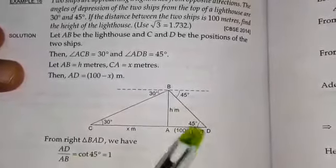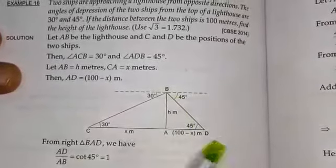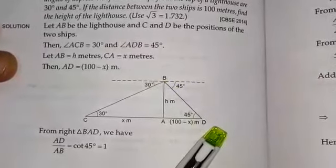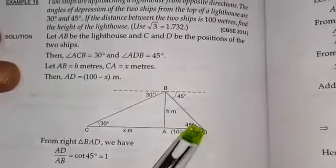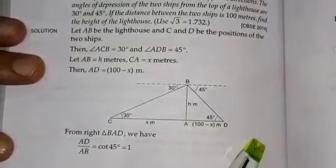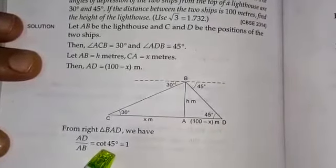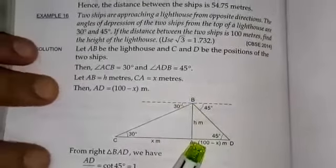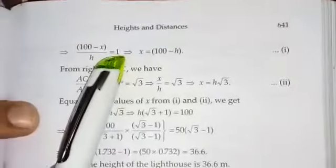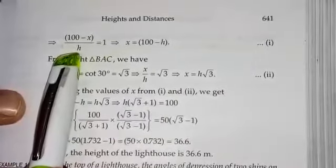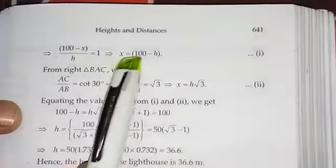Now let's take up right triangle BAD. In right triangle BAD, we need to connect 45 degrees with AB and AD, so it can be cot 45. That gives us adjacent over opposite, which is 100 minus X over h. The value of cot 45 is 1, so 1 equals (100 minus X) over h.